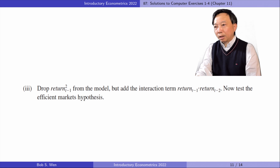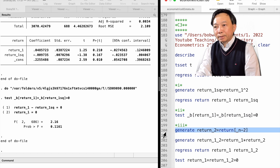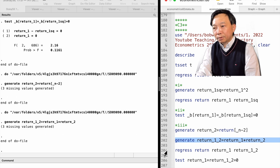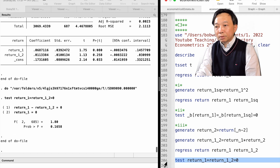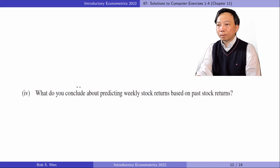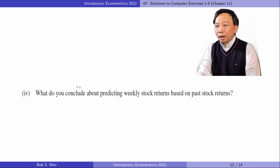In part 3, drop the squared term from the model, but add the interaction term between returns at time t minus 1 and t minus 2. Now test the efficient markets hypothesis. We generate the second lag of return and the interaction term between the first lag and the second lag. The F-test gives a p-value of 0.17, so we could not reject the efficient markets hypothesis at the 10% level. In part 4, what do you conclude about predicting weekly stock returns based on past stock returns? Based on the F-test from various specifications, we find no significant evidence that past returns help predict current stock returns.